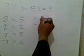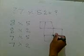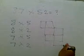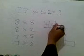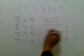Draw the shape. 8 times 5 is 14, 8 times 2 is 16, 7 times 5 is 35, 7 times 2 is 14.